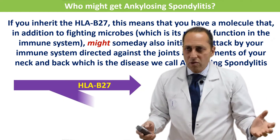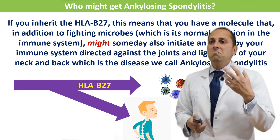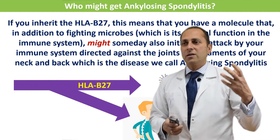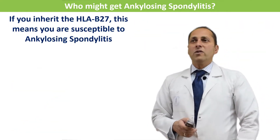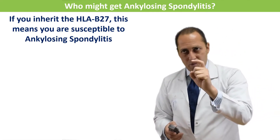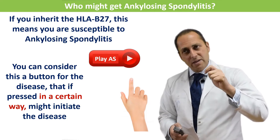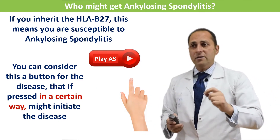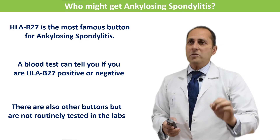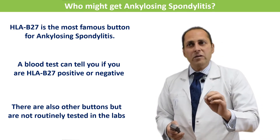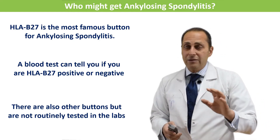The B27 is a normal molecule in the human body — it's not a disease. It attacks microbes, but sometimes it makes this mistake and results in initiating the process of ankylosing spondylitis. Remember, it's only a possibility. If you inherit HLA-B27, you are susceptible to ankylosing spondylitis. Consider it a button for the disease that, if pressed in a certain way, might initiate the disease. HLA-B27 is the most famous button for ankylosing spondylitis. A blood test can tell you if you are HLA-B27 positive or negative. There are also other buttons but they are not routinely tested in labs.